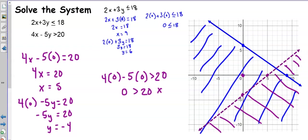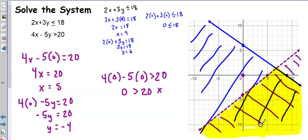With both inequalities graphed, I look for the double-shaded region. It's just this section over here — I can be on this part of the solid boundary line, but not on the dotted boundary line; I have to be just to one side of it. All of this section is included in the solution to this system.